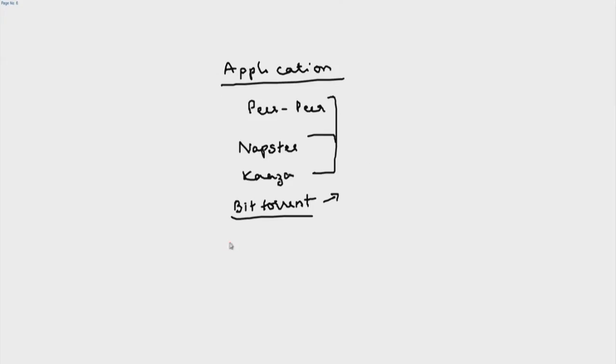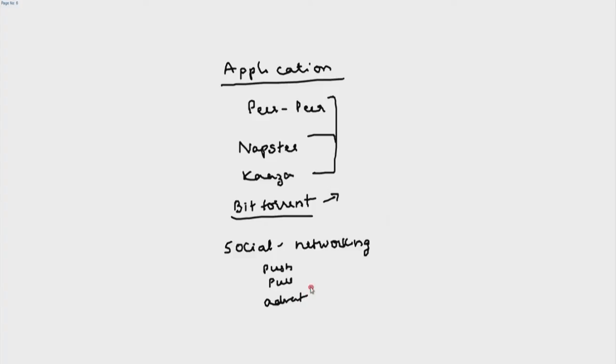Some other things happening in the application space: social networking. With the advent of Facebook, Twitter, WhatsApp and so on, there is a lot of research on how to push content, how to pull content, and how to advertise. What kind of push-pull architecture should you use? You collect a lot of log information, do data mining to figure out the general behavior of users, leverage that behavior, and design an architecture that makes the dissemination of information very efficient.